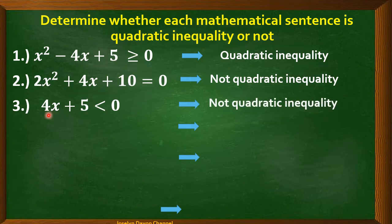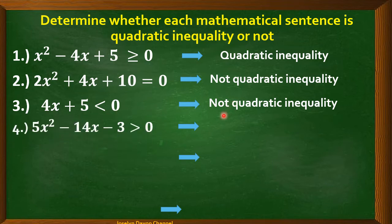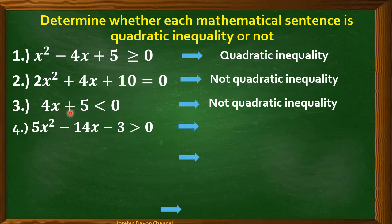Number 3: 4x + 5 < 0. This is not quadratic inequality. The degree is only 1. Though we have an inequality symbol, the degree must be 2. That is why example number 3 is not quadratic inequality.